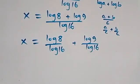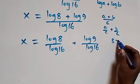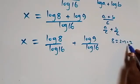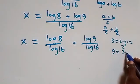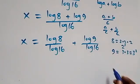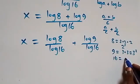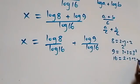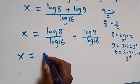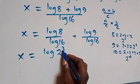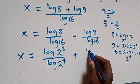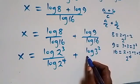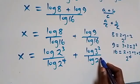We can reduce this further. We write 8 as 2×2×2, which is 2 raised to power 3; 9 as 3×3, which is 3 squared; and 16 as 2×2×2×2, which is 2 raised to power 4. So what we have becomes x equals log(2³) over log(2⁴) plus log(3²) over log(2⁴).